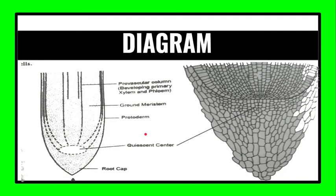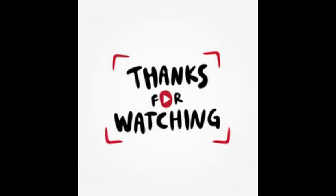So this was our today's topic. In our next topic we start our next type of tissue. Our first type that was the meristematic tissue is now complete. Thank you and have a nice day.